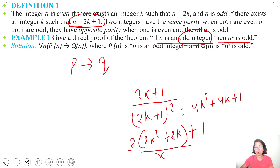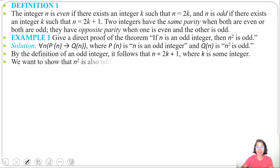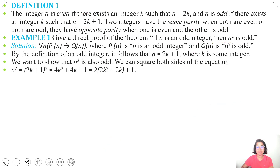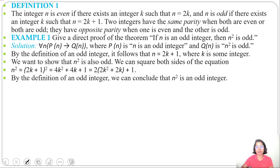So if n is odd then n squared is also odd. Hence we prove by definition of odd integer that if n is an odd integer then n squared is also odd.